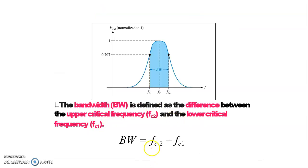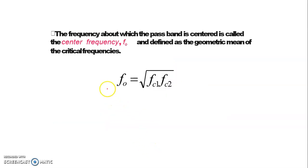Bandwidth is the difference between the upper and lower cutoff frequencies and is the range of frequency allowed by the bandpass filter. The central frequency is always the geometric mean of the upper and lower cutoff frequencies. You can prove this by referring to the active resonant bandpass filter analysis in Integrated Electronics by Millman and Halkias. This analysis is very good and readable, so I recommend reading it or presenting it as an assignment.